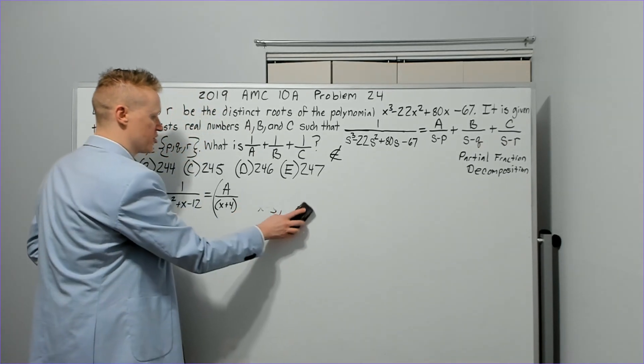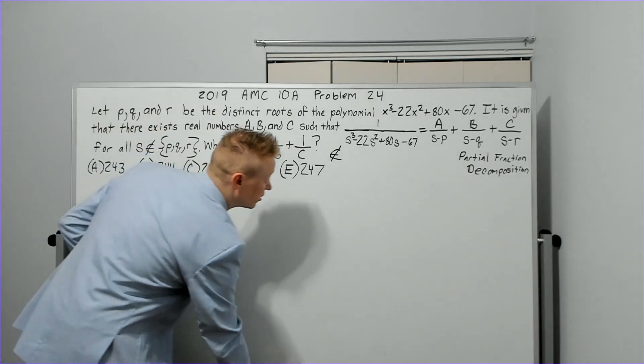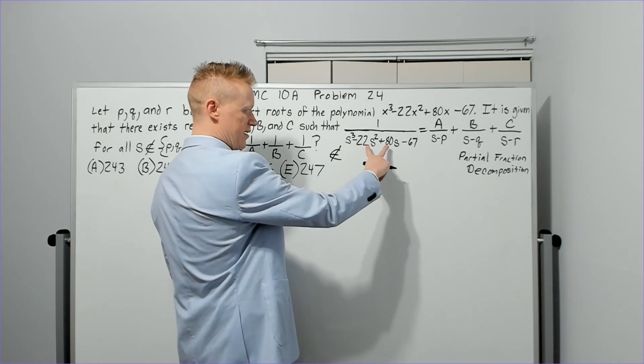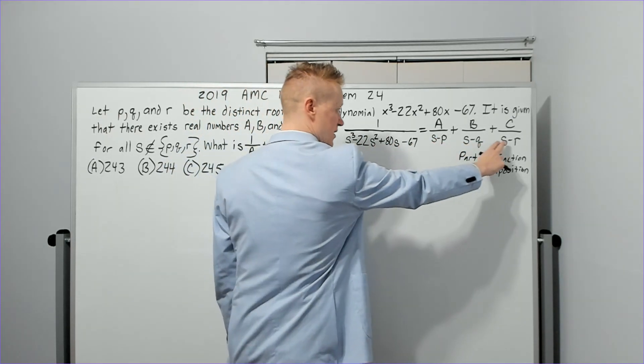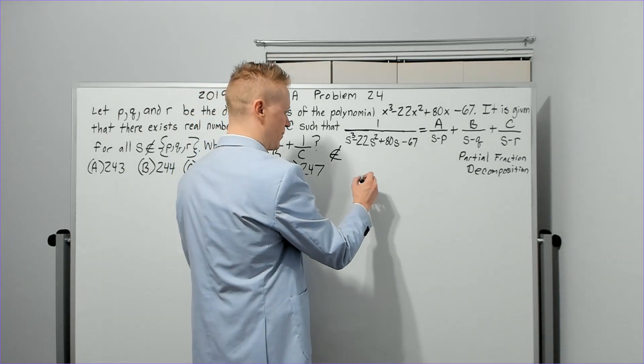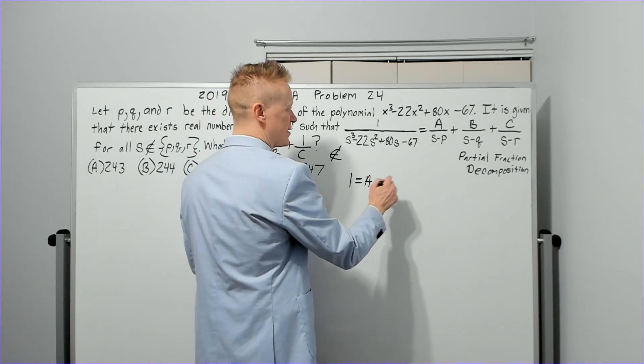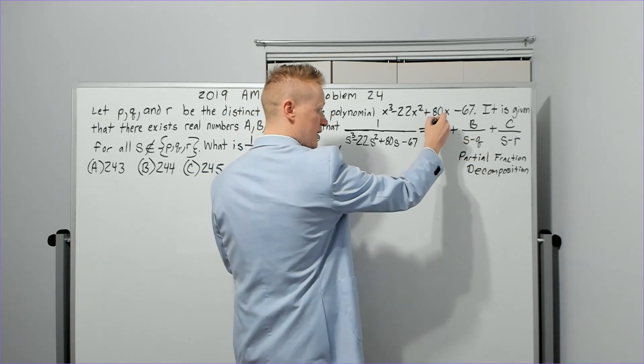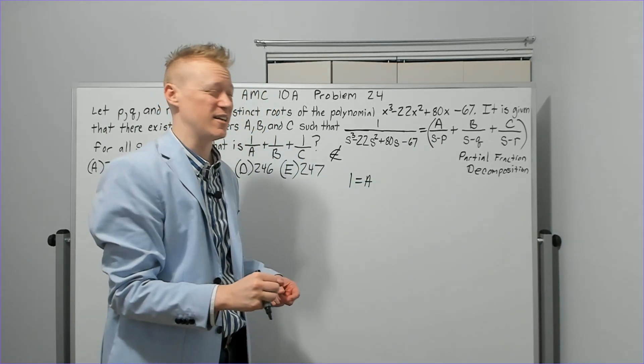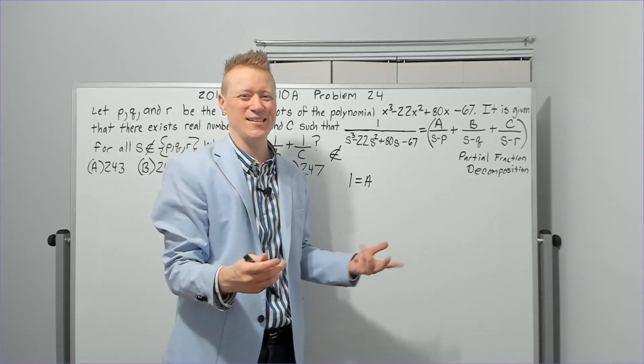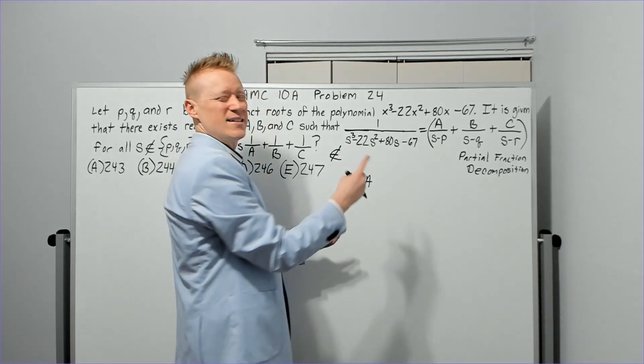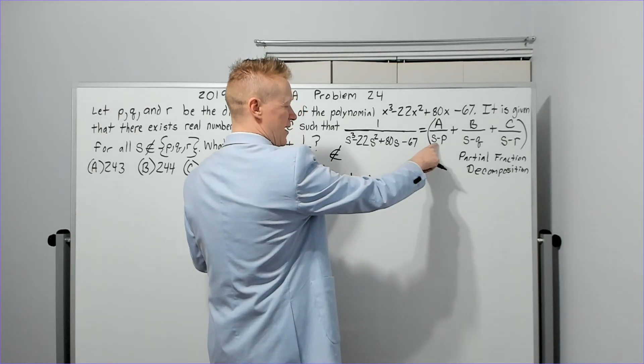With that demonstration of partial fraction decomposition out of the way, we're going to apply that to this one. There's just three factors instead of two. So, we're going to multiply by the common denominator on both sides, and we know this times this times this does make this. We're going to go a little bit faster now because we did the demonstration. I'm not going to break down exactly what's happening.